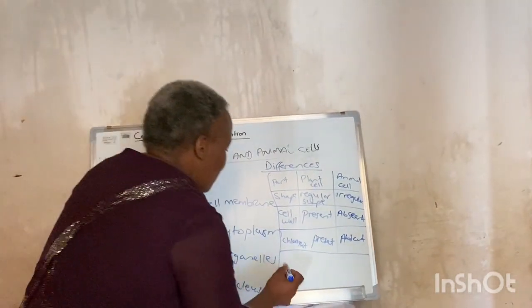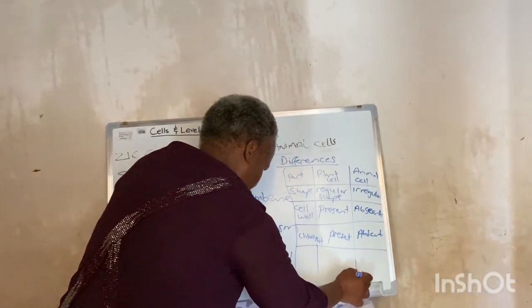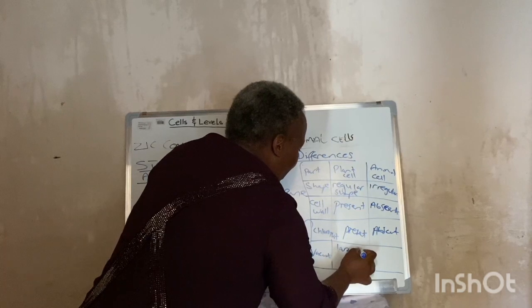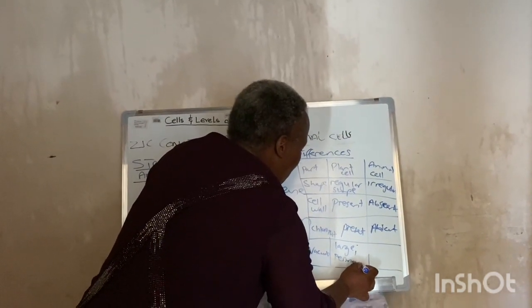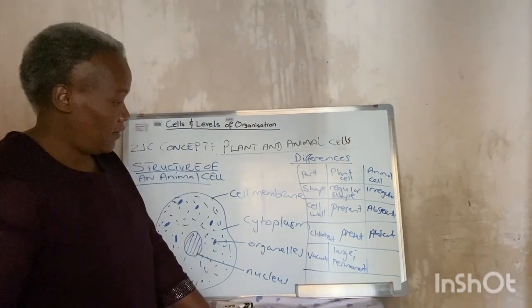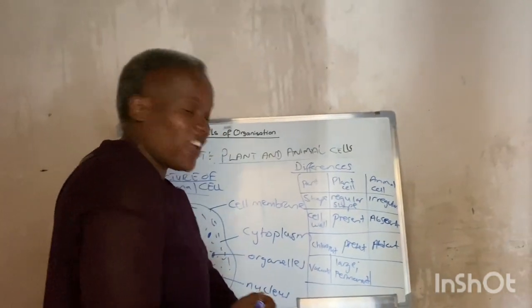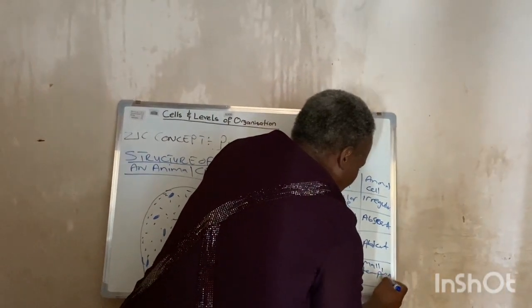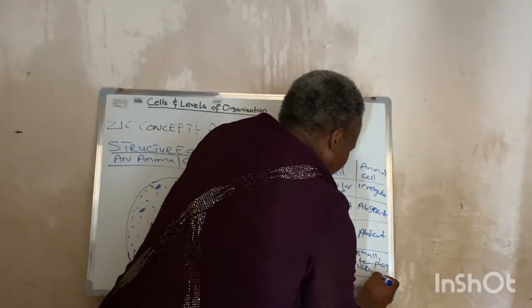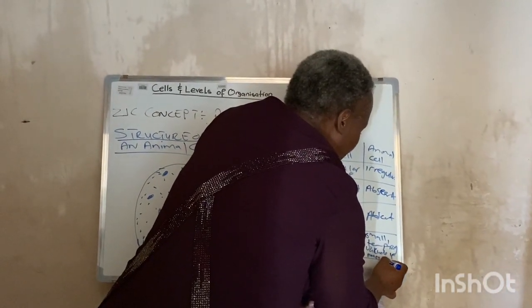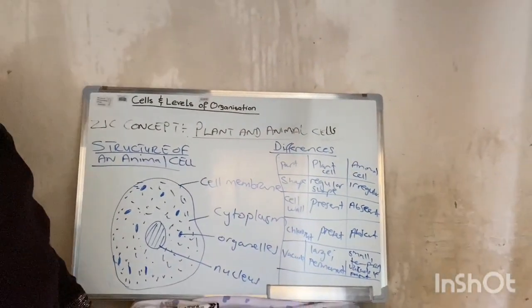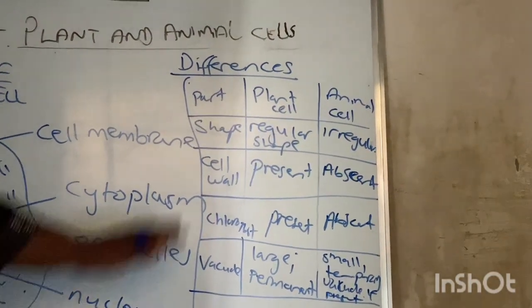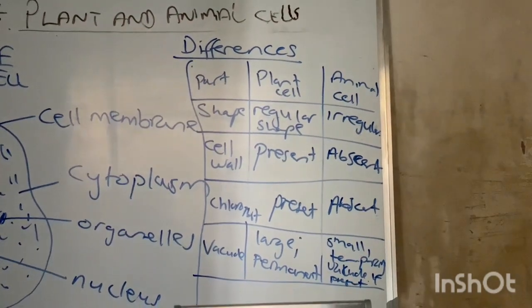Last but not least, plant cells have a vacuole which is quite large and permanent — something permanent is always there. But in animal cells, they might have small, temporary vacuoles if present at all. Most of the time, animal cells do not have vacuoles. So these are the main differences between plant and animal cells.